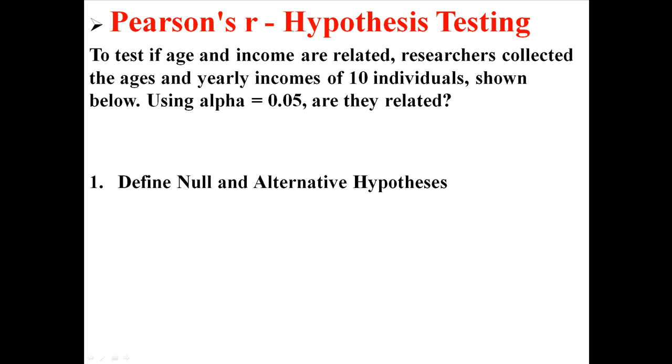So first we are going to define our null and alternative hypotheses. Now this is what I use. You might see this written a number of different ways, but this is how I do it. The null is that the relationship in the population is equal to zero, and the alternative is that it's not. We're testing to see if it's not zero, if there actually is some kind of relationship in the population.